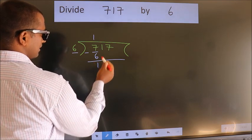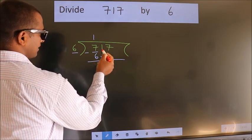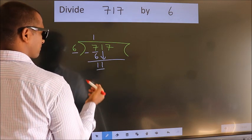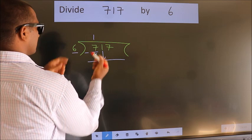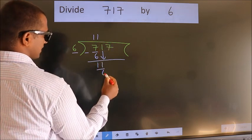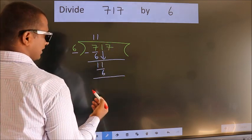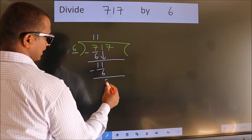After this, bring down the beside number. So 1 down. So 11. A number close to 11 in 6 table is 6 once 6. Now we subtract. We get 5.